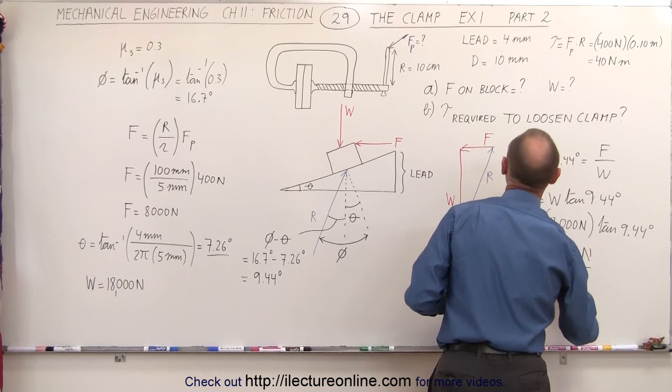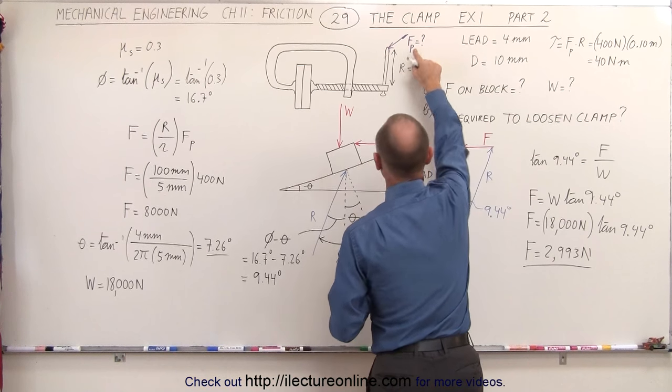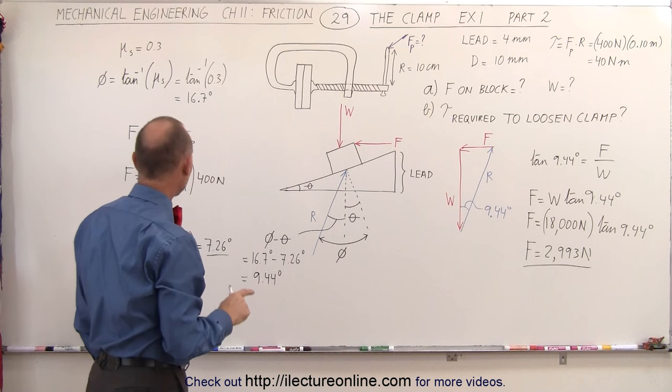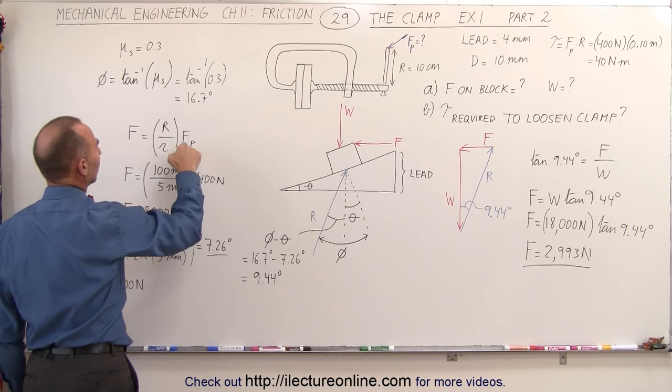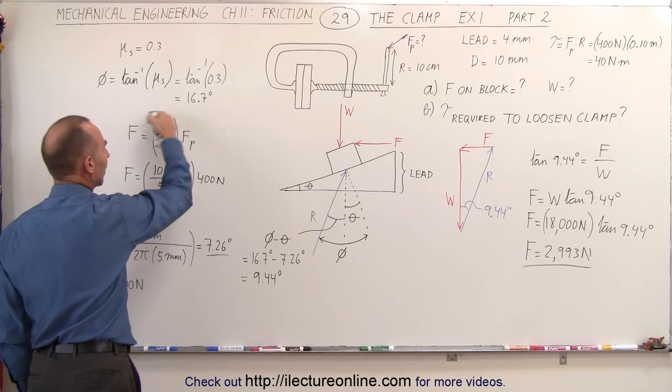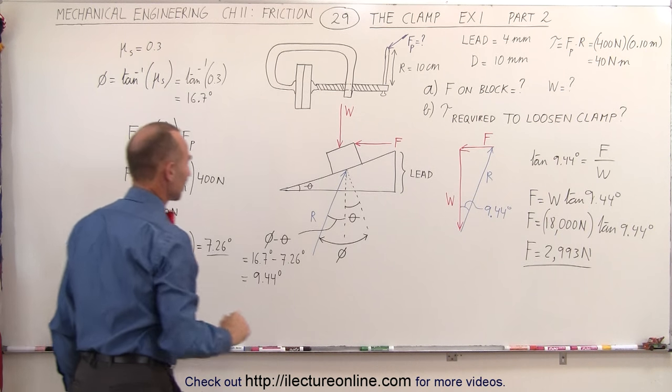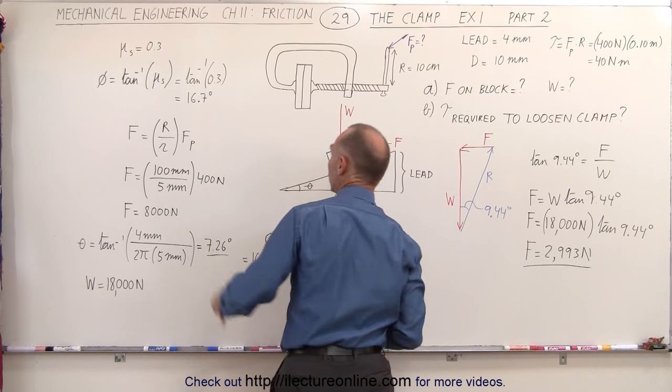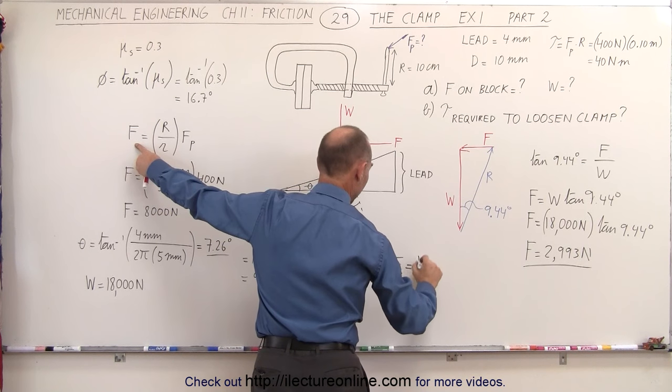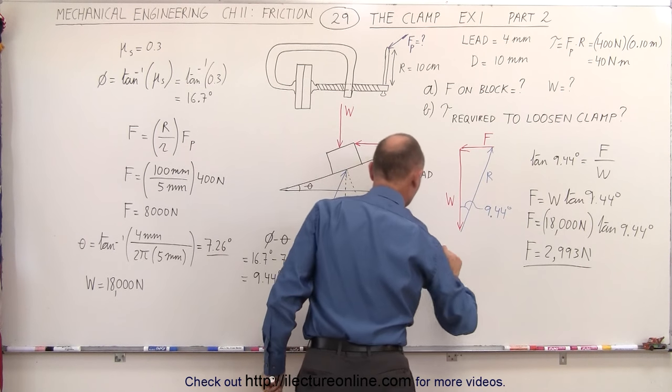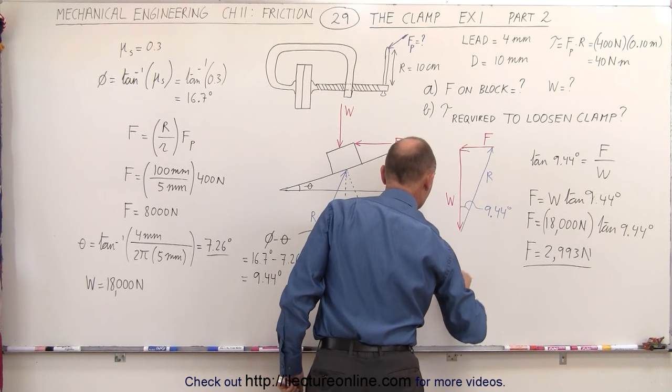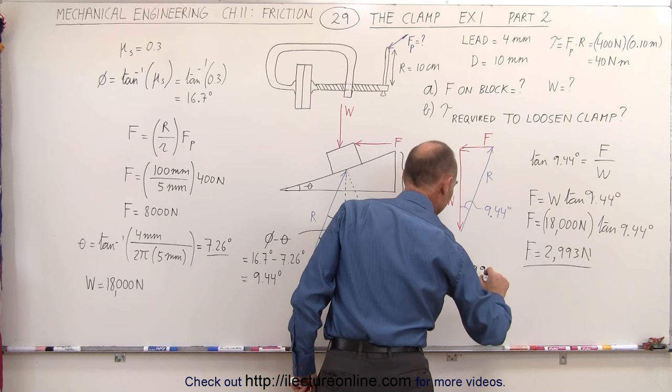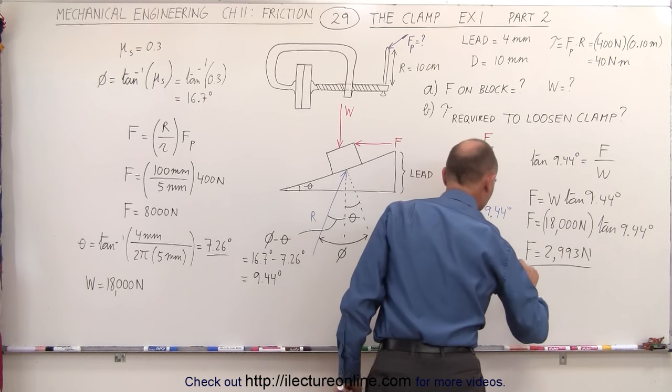Now this F is not this F up here. That's the force applied to the thread. Now we can find the torque and F sub P using this ratio right here. So let's go ahead and find F sub P. F sub P is equal to F times the inverse of that ratio. This is r divided by big R.